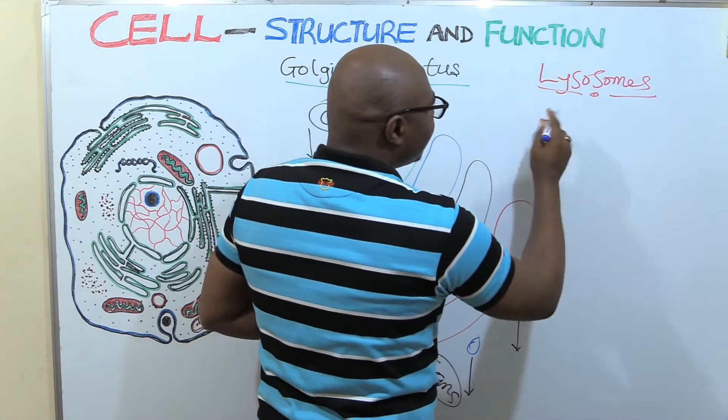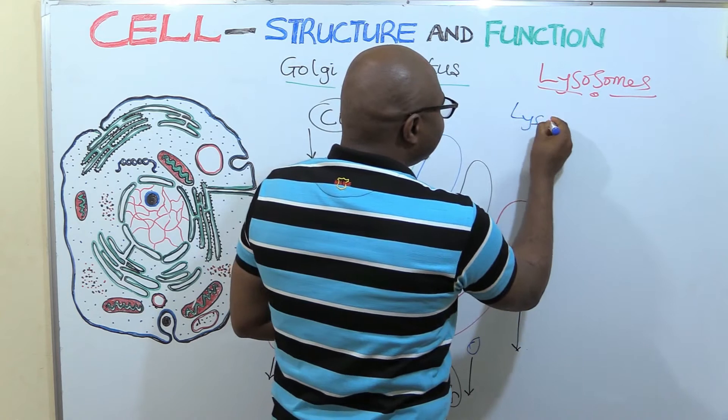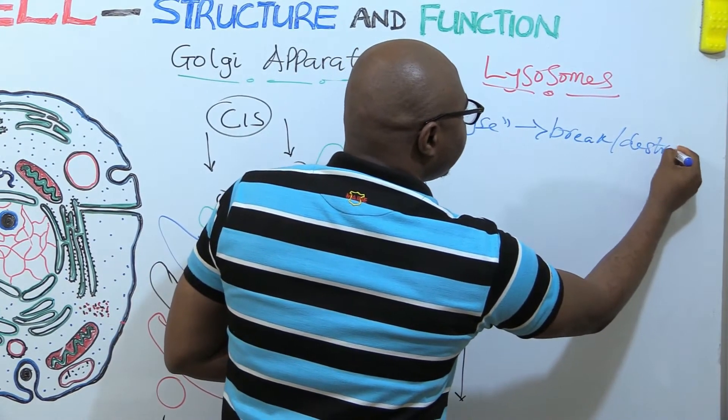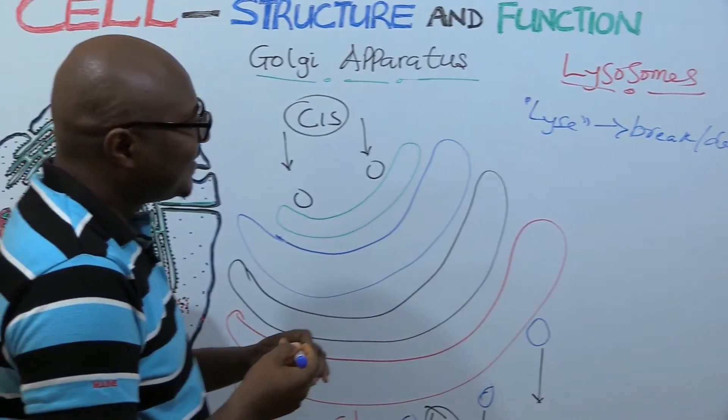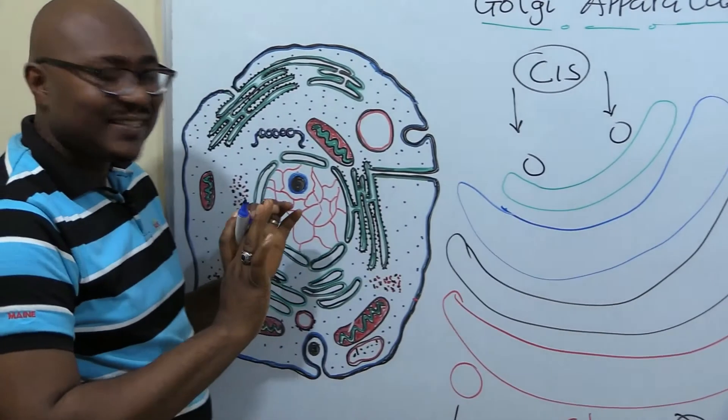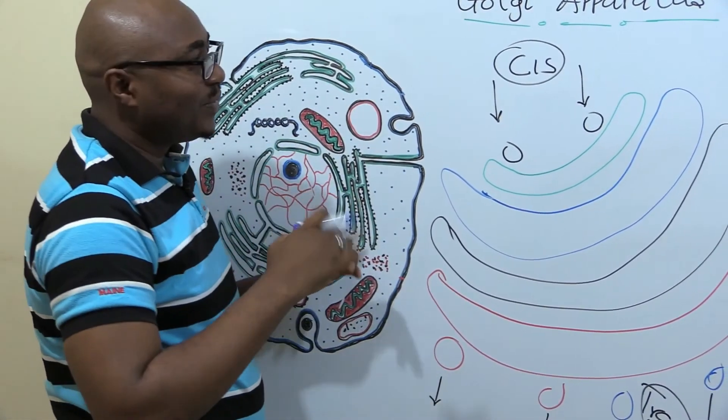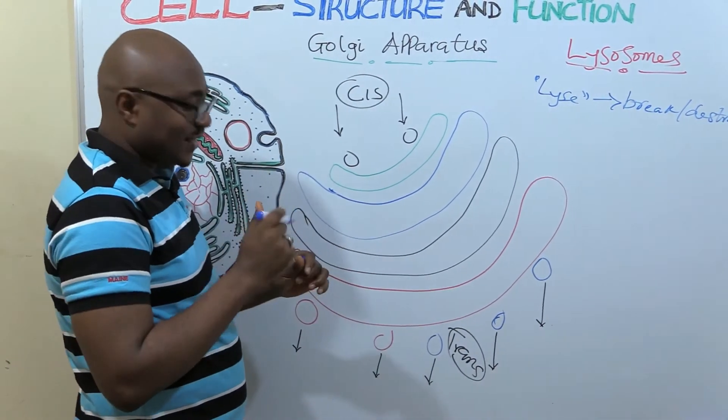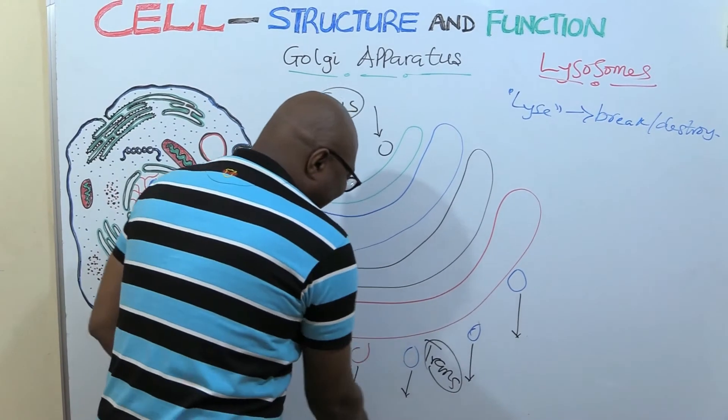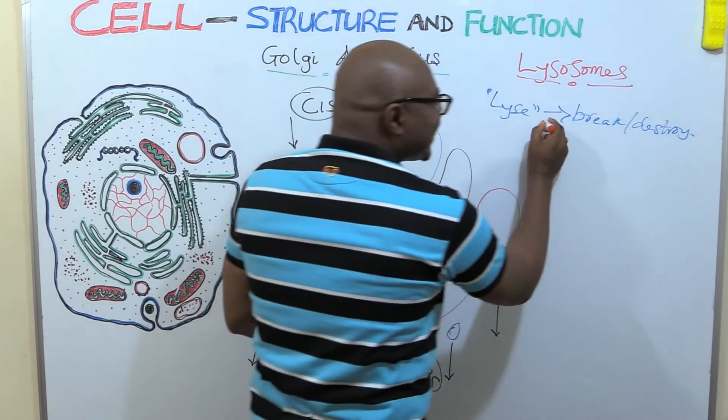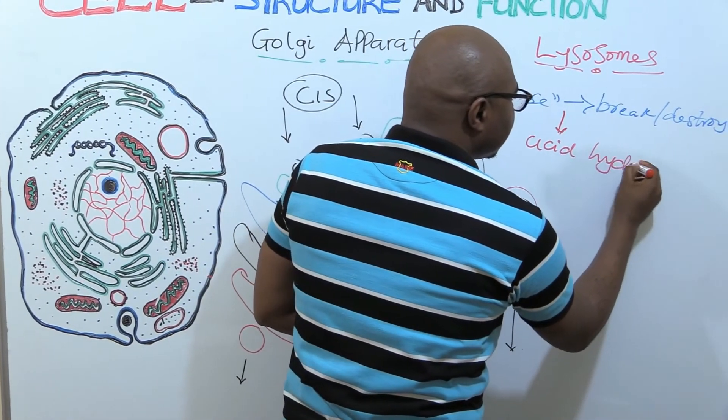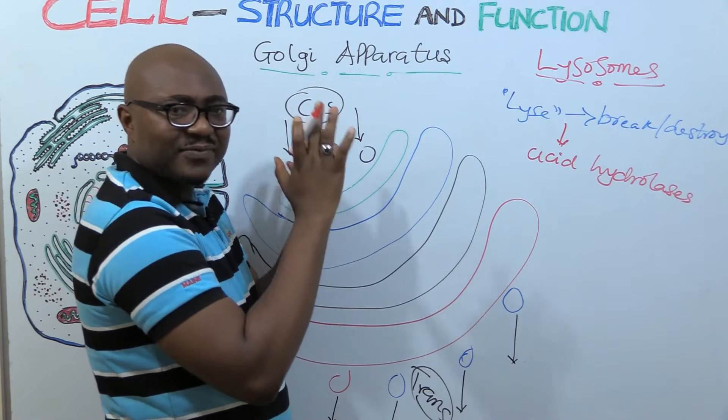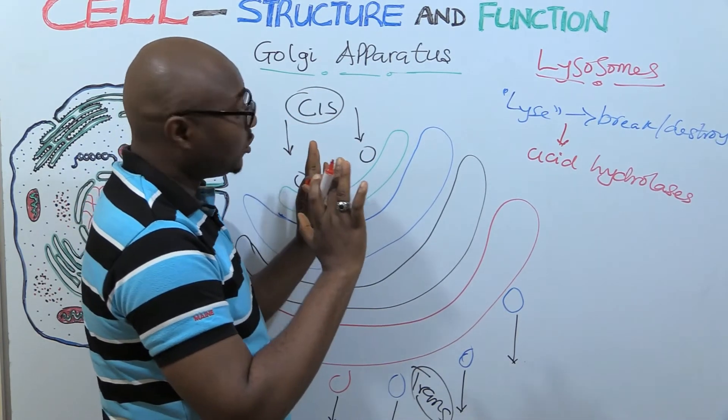Now look at the word lysosome. Anything soma has to do with body. So lyse means to break or destroy. So these lysosomes, they are like the digestive system of the cell. They do a lot of breaking. So they have so many, maybe up to 100, 200 different kinds of enzymes. And the enzymes are all of the class called acid hydrolases. That means these enzymes function best in acidic medium, a pH of about 5.